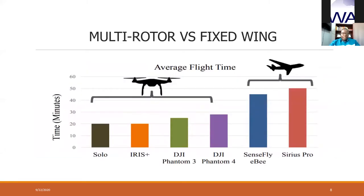This graph shows the average flight time for some types of drones on the market — the Solo, Iris Plus, DJI Phantom 3, DJI Phantom 4, SenseFly eBee, and Cirrus Pro. We can see an average flight time of zero to 40 minutes for multi-rotor drones, whereas fixed-wing drones can go up to 60 minutes — one hour. Some can fly for two hours, some three to four hours, and there are some flying for up to 12 hours.